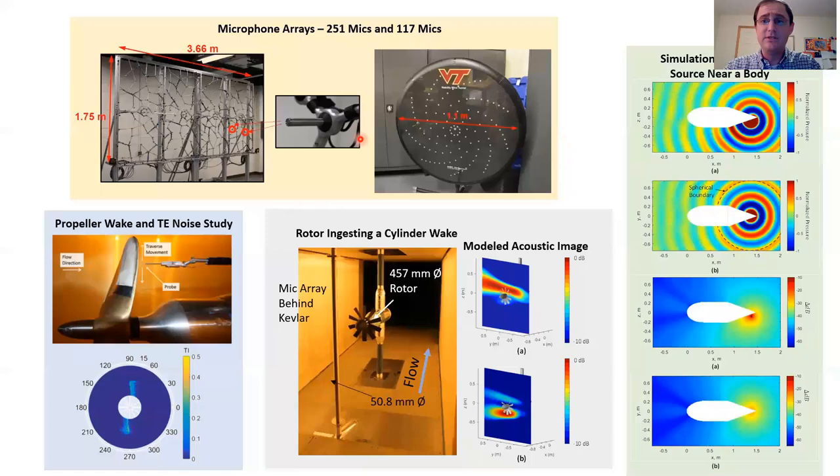Here you can see two of the microphone arrays that I mentioned on the previous slide. These are core instruments for my work. The array on the left has 251 microphones, and the one on the right has 117 microphones. These enable us to produce images of the acoustic sources, like shown in the figure below for a rotor ingesting a cylinder wake.